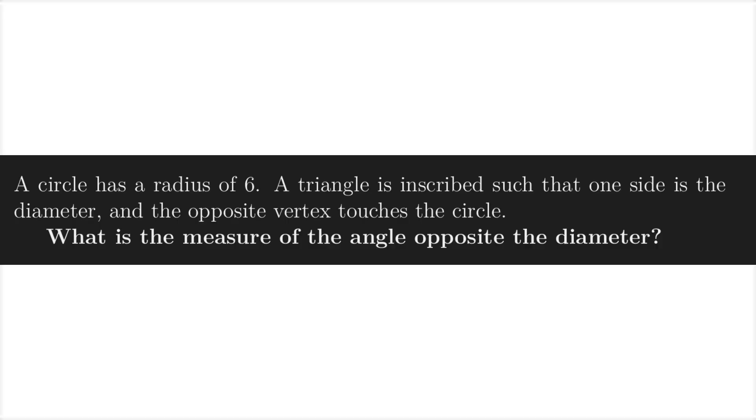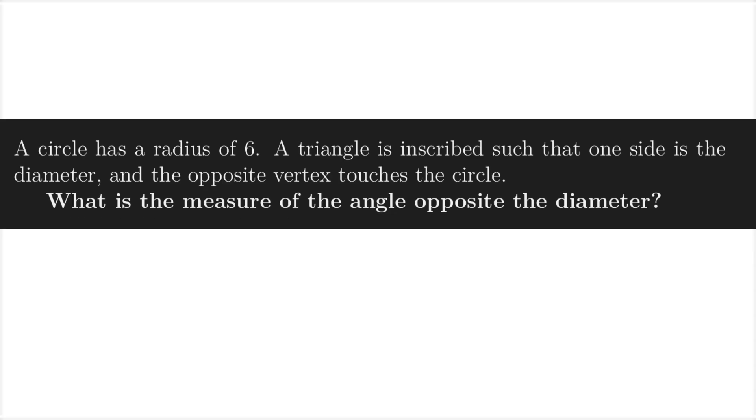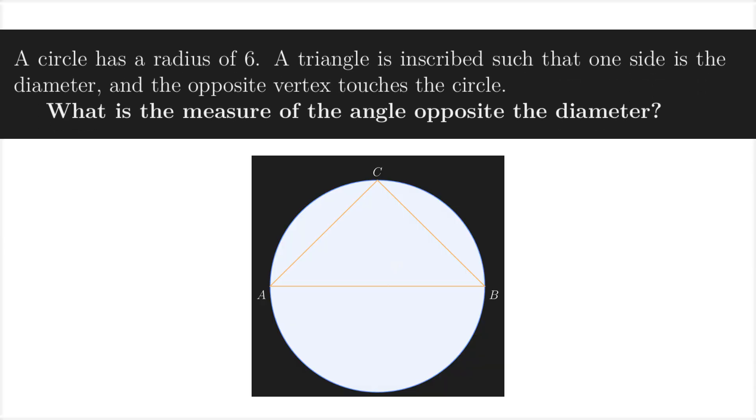A circle has a radius of 6. A triangle is inscribed, such that one side is the diameter, and the opposite vertex touches the circle. What is the measure of the angle opposite the diameter? So here in the circle, it wants the measure of the angle C. Simply by visualizing the problem, we can tell that angle C is 90 degrees. But to get technical, by Thales' theorem, any triangle inscribed in a circle where one side is the diameter is a right triangle. So, the angle opposite the diameter is 90 degrees.